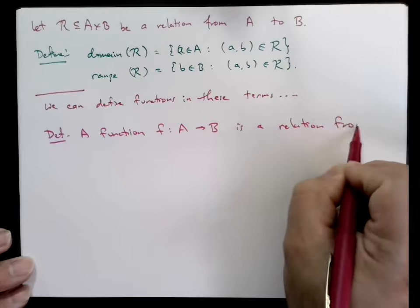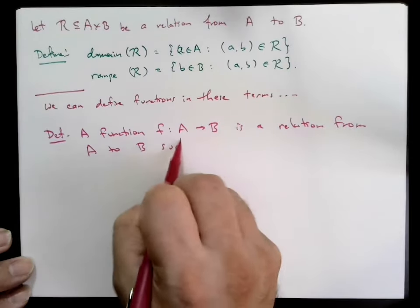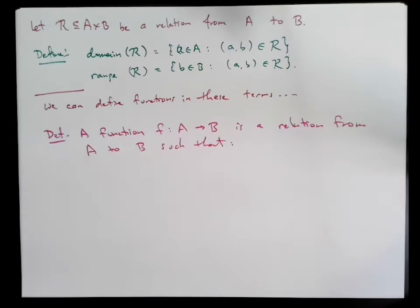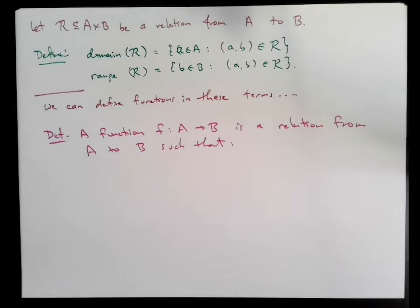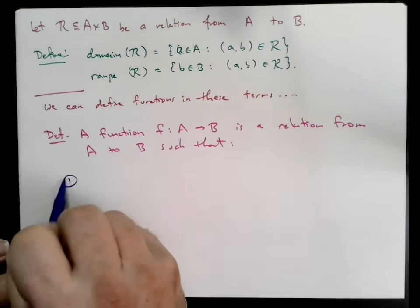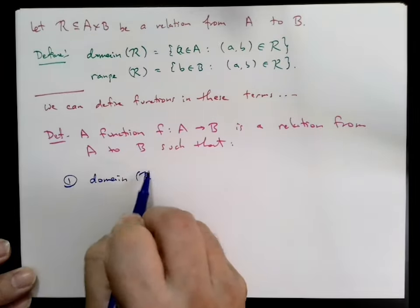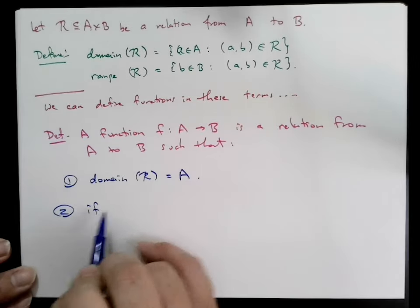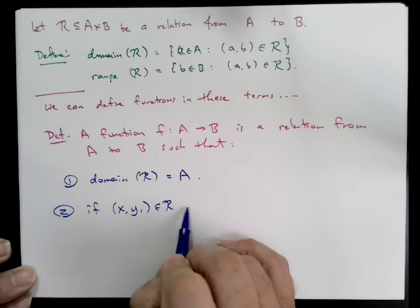Now, a function F going from A to B can be thought of as a relation on A cross B. But notice a function is special because it has the first property that the domain of a function must be the whole set A.